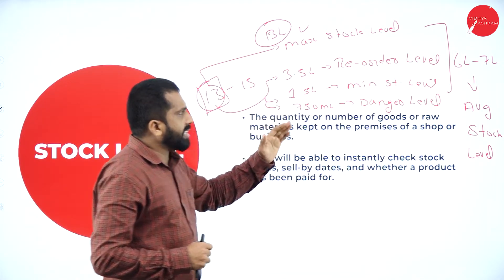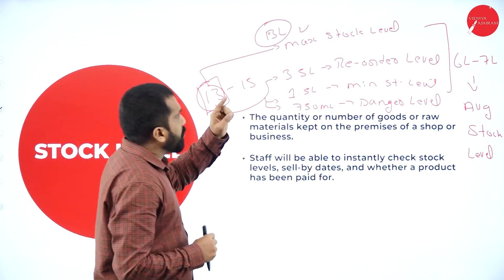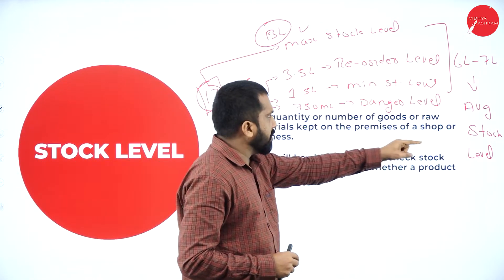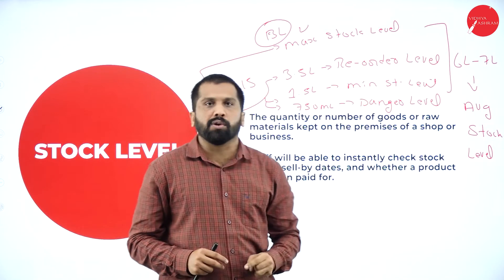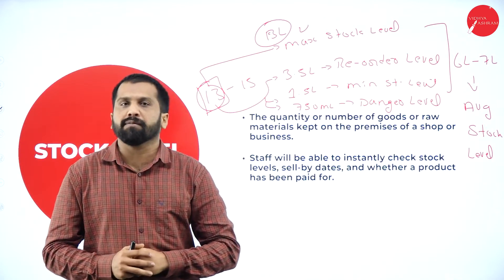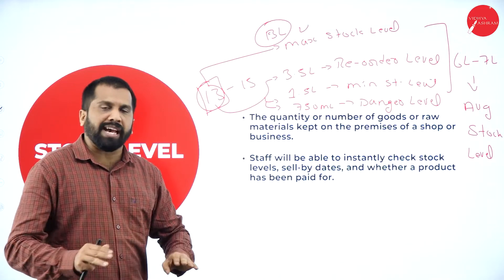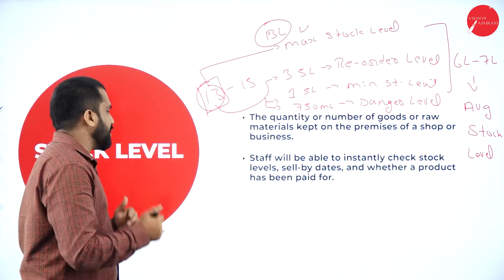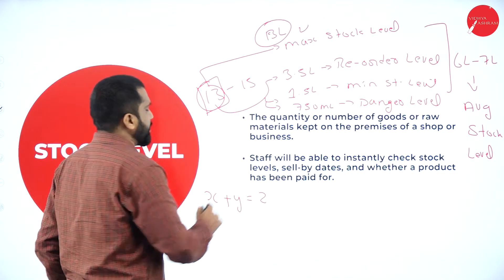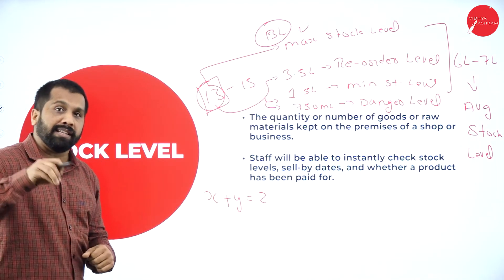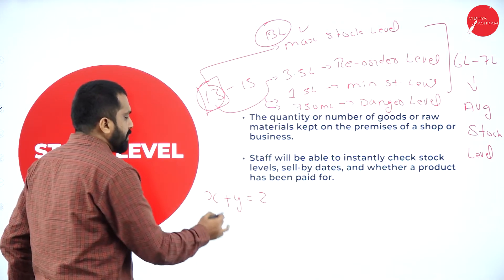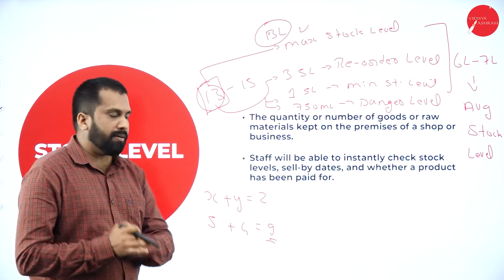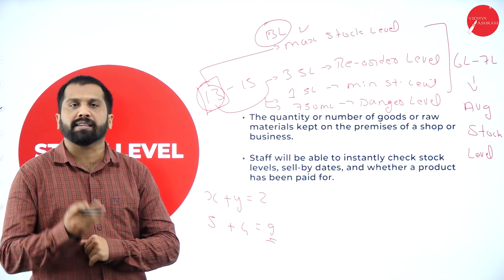In stock level, you have to find out: maximum stock level, minimum stock level, reorder level, danger level, and average stock level — 5 formulas in total. If you learn these 5 formulas, your stock level is done. No complex calculation, no heavy concept. Just remember the formula, copy the values given in the question, and apply — and you will easily get 10 marks.